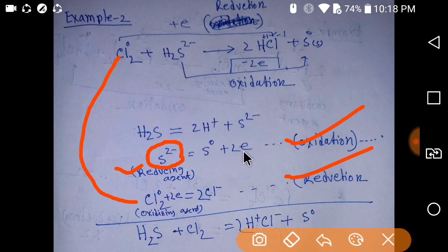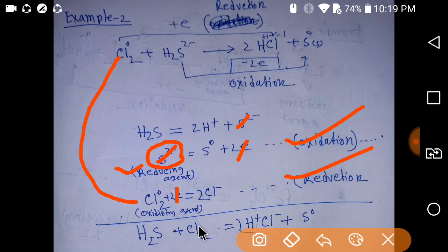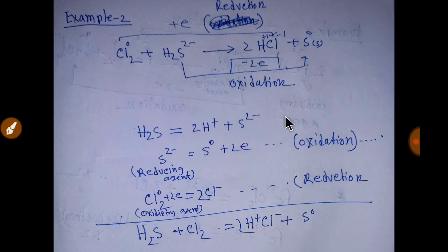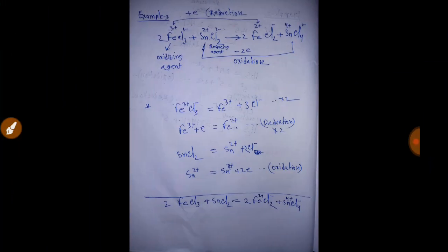Now balance the electrons: two electrons cancel out. Combine the half-reactions — cancel common terms — and you get hydrogen sulfide plus chlorine giving 2HCl and one molecule of sulfur. That is the balanced equation. Now we will go to the third example.